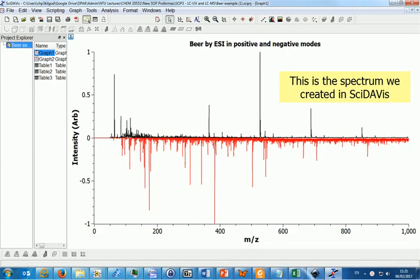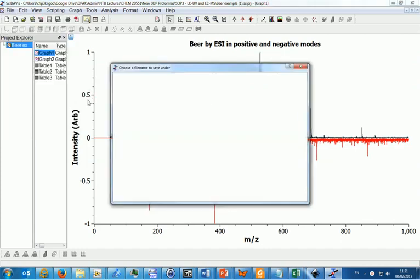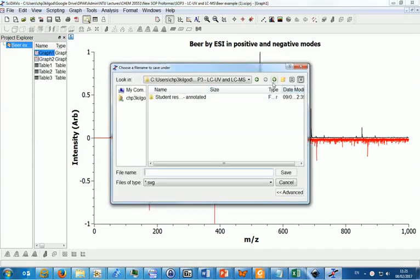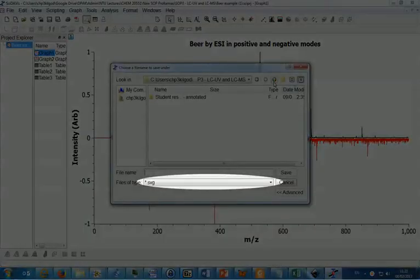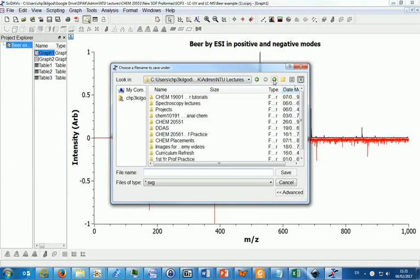So here is a spectrum in SciDAVis similar to the one you will have created from your beer data. To export the spectrum, go to the file menu and select export graph like you can see here. Make sure to save the file as an SVG file, that stands for support vector graphics. Make sure to save the file with a sensible name to a sensible location so you can find it later.